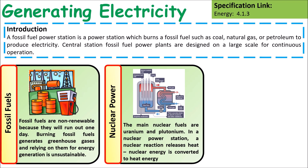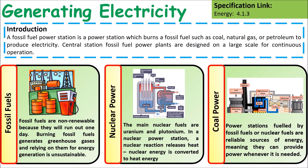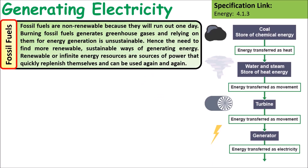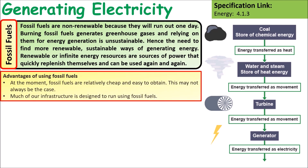Nuclear power stations generate electricity using heat from nuclear fuel rods to heat water. Coal power stations use heat from burning coal to boil water, which can then be used to turn turbines. Fossil fuels are non-renewable because they will run out one day, and burning them generates greenhouse gases, making long-term reliance on them unsustainable.